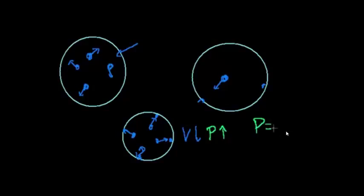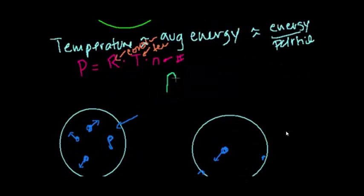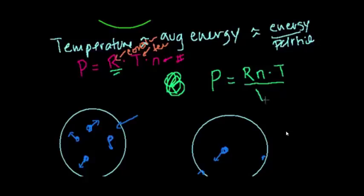So the number of particles is the same, the temperature is the same, but the volume has gone down. Now these guys are going to bump into the sides of the container more frequently and there's less area. So at any given moment you have more force and less area. So when you have more force and less area, now your pressure is going to go up. So when the volume went down, your pressure went up. So pressure is inversely proportional to volume.